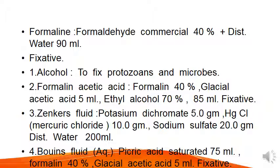Next is Zancos fluid: potassium dichromate 5 gram, mercuric chloride 10 gram, sodium sulphate 20 gram, distilled water 200 ml. This is also used to fix the tissue. Next is Bowen's fluid: aqueous picric acid saturated 75 ml, formaline 40%, glacial acetic acid 5 ml. All are mixed and the solution is prepared, kept in a bottle. This is also used as a fixative.